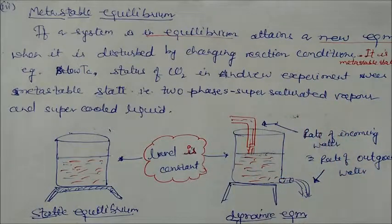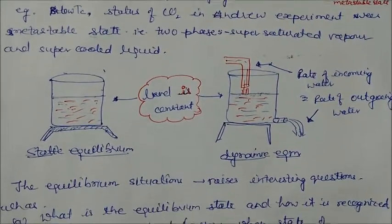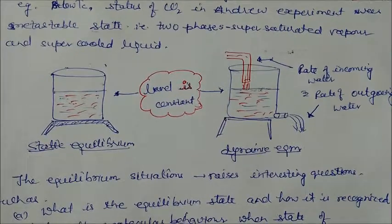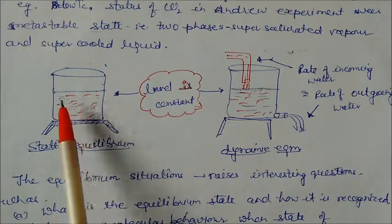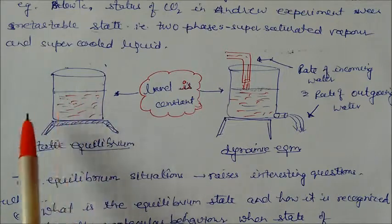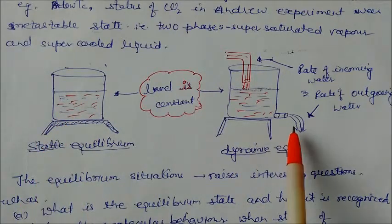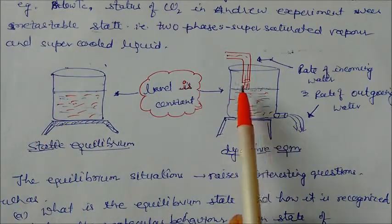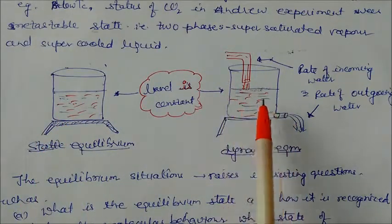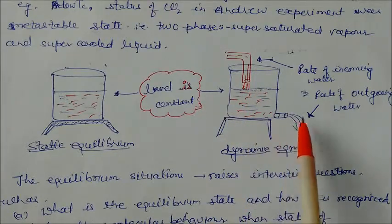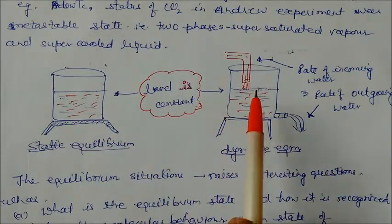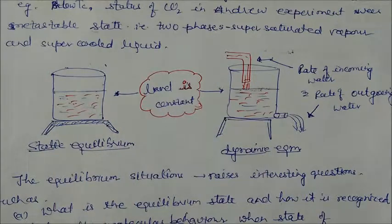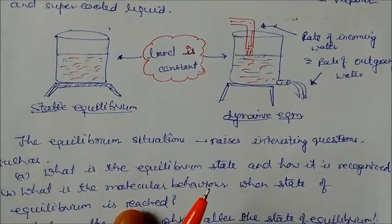As shown in the diagram: a half-filled vessel where the water level is constant — that is static equilibrium. In the other case, the rate of incoming water equals the rate of outgoing water, but the level is still constant — that is dynamic equilibrium.